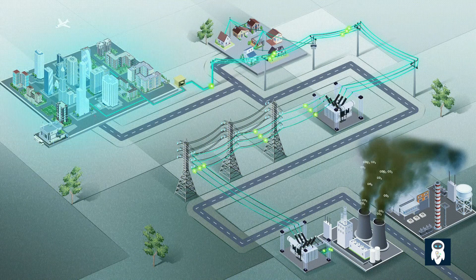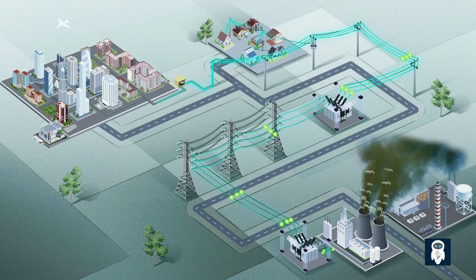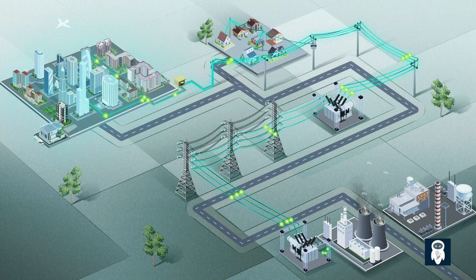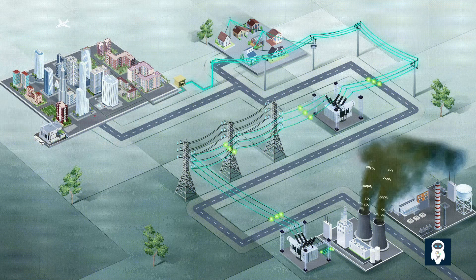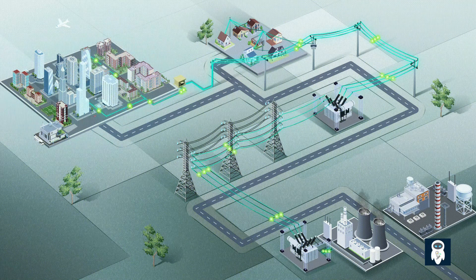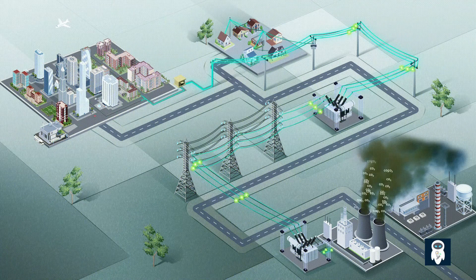Electricity distribution networks are the lifeline of modern society, delivering power to our homes, businesses, and industries. The effectiveness of these networks is paramount for economic prosperity and a high standard of living. In this video, we will explore two important reliability indices used to assess the performance of electrical distribution networks. Let's dive in.